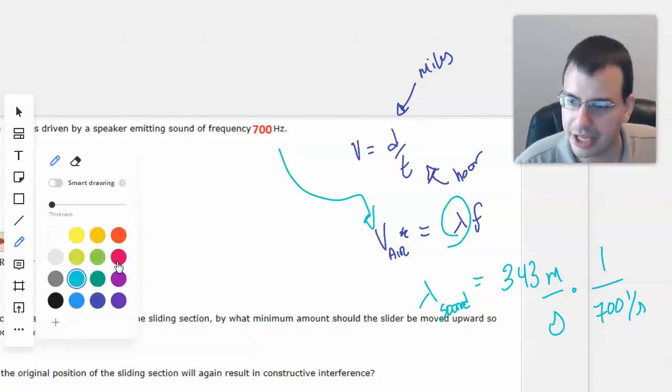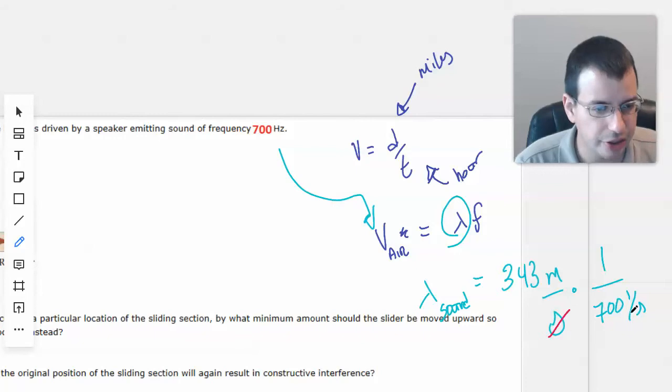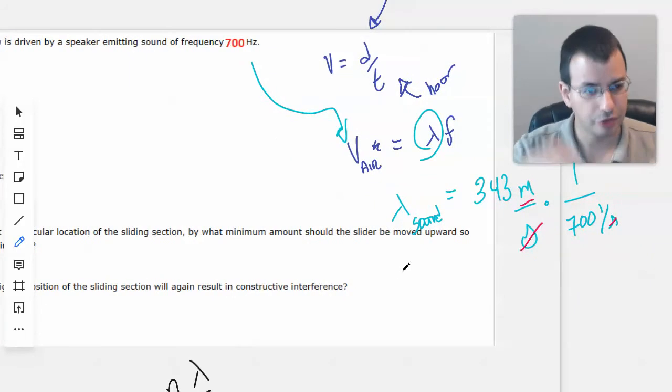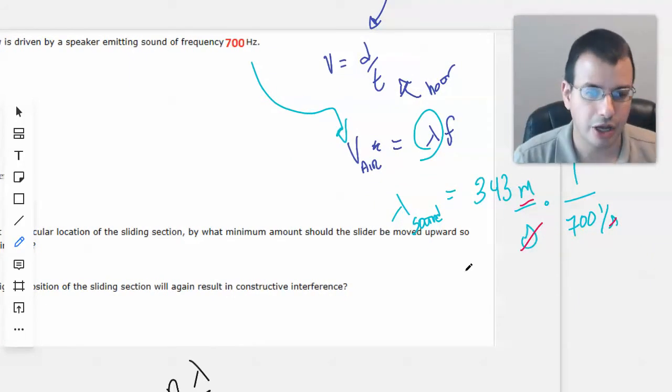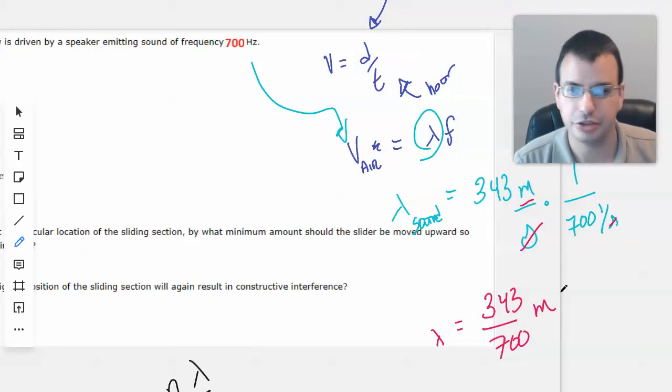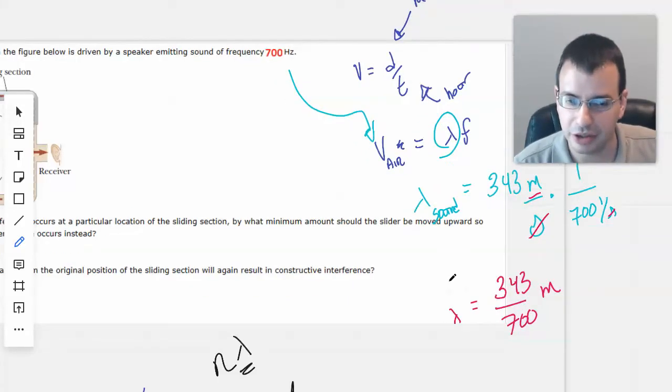So it'll be 700, and I'm going to write that as one over seconds. Do a little canceling just to make ourselves feel better, and we are left with meters. Which is good, because a wavelength is measured in a meter. And if we're moving this slide up and down, ideally we'd be moving it up and down in meters. So one wavelength equals 343 over 700 meters.